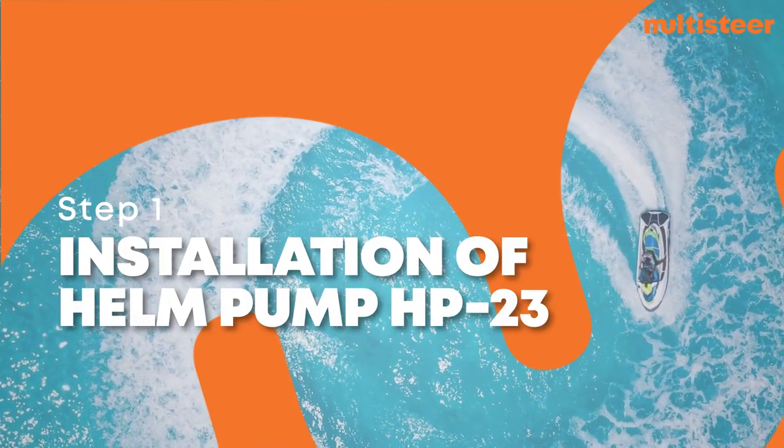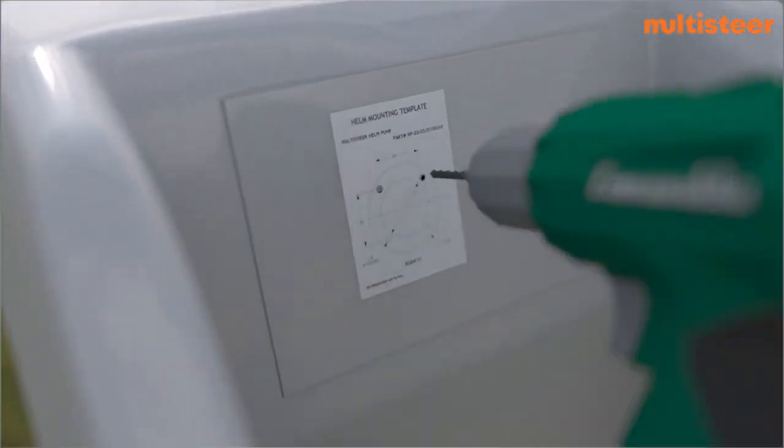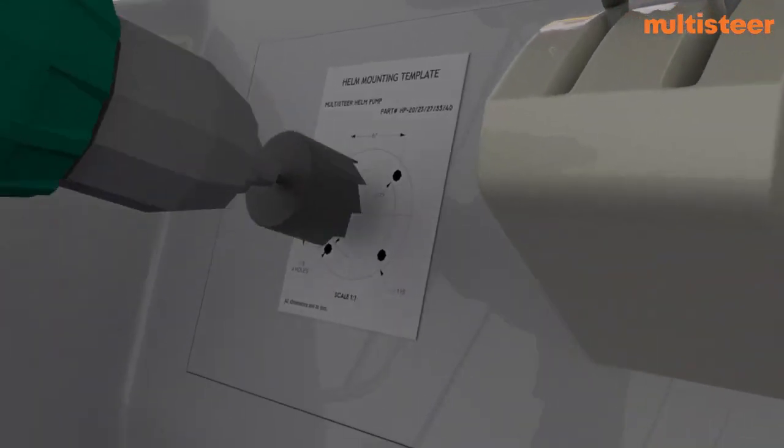Step 1. Installation of helm. Place the helm mounting template supplied with the installation manual on the dashboard where the helm is to be mounted. Drill four small holes and one big hole in the center as per the template.